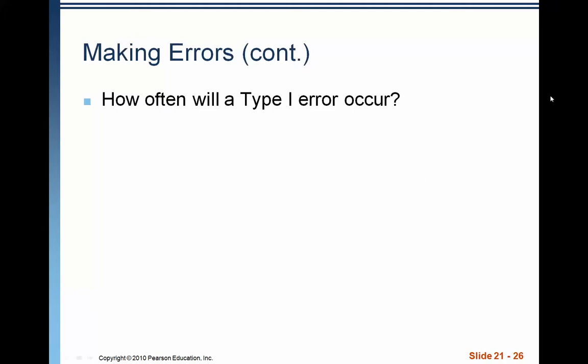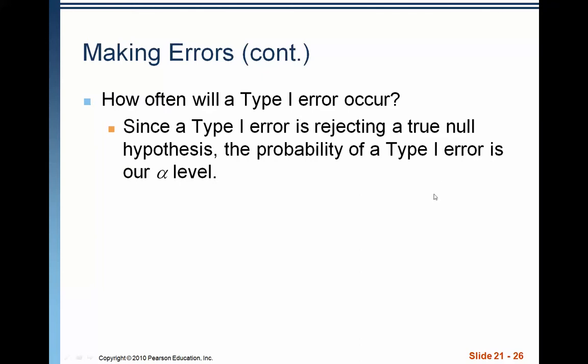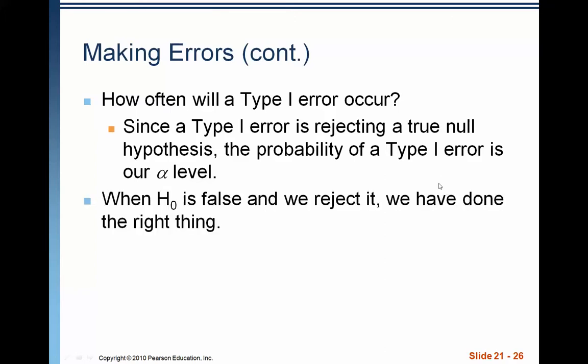How often does a type 1 error occur? A type 1 error occurs when we reject a true null hypothesis. That means the type 1 error rate is actually our alpha level. Since the alpha level gives us the threshold for when we're going to reject the null hypothesis — say it's 0.05 — that means we have a 5% probability of a type 1 error occurring. We can reduce the probability of a type 1 error by lowering our alpha value, and if we have a higher alpha value, we increase that probability. A type 1 error means we're rejecting the null hypothesis when we should not have.